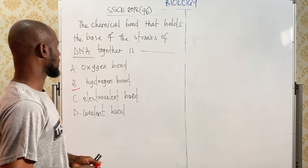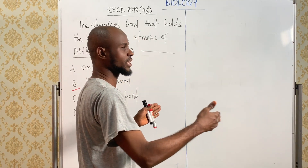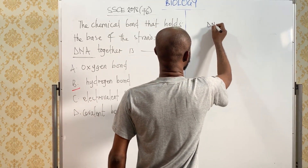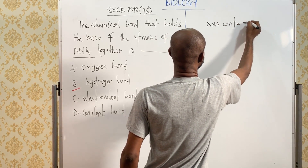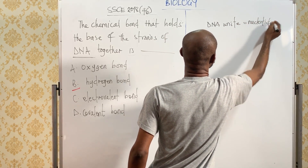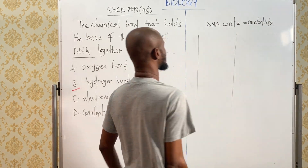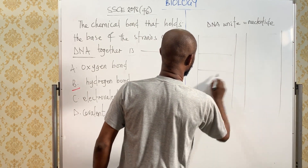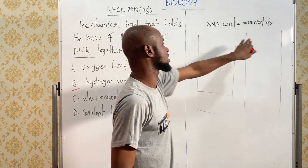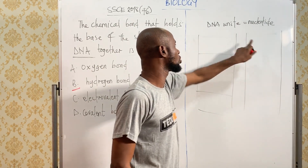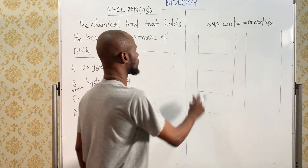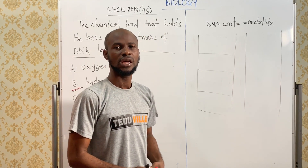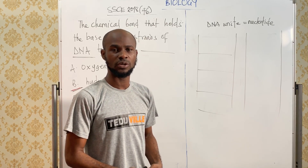Let me explain a little. Don't forget — what makes up the strands of your DNA? We have two strands of DNA linked together. The unit that makes up the strands of DNA is called the nucleotide. Each nucleotide consists of three segments: the first is the phosphate, the second is the pentose sugar, and the third is the nitrogenous base.